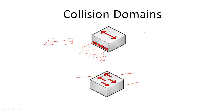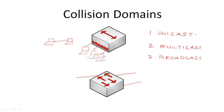Now there are three types of messages that you can send from one computer to another. The first type is called a unicast message, the second type is called a multicast message, and the third type is called a broadcast message. For a unicast message, you send from one device to another device. For a multicast message, you send from one device to many computers.